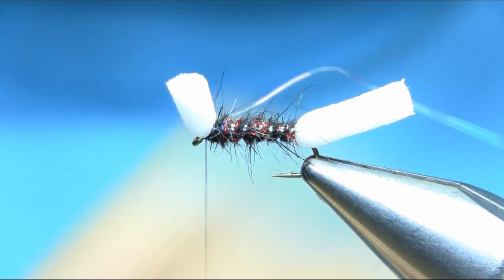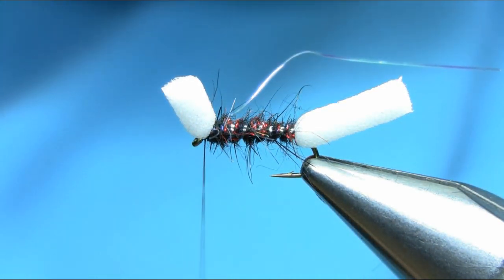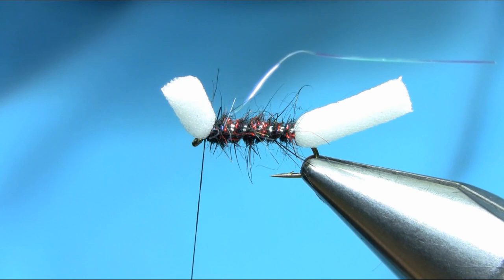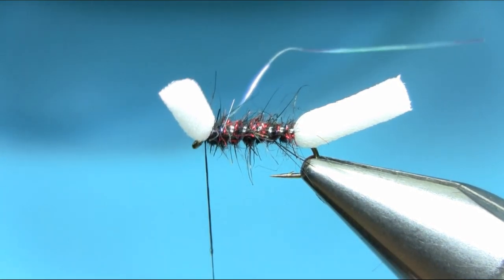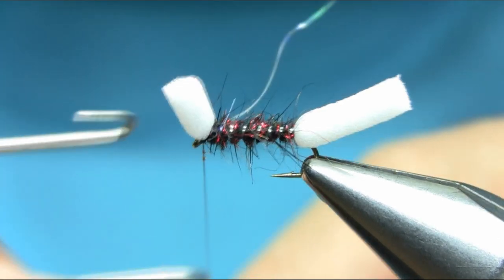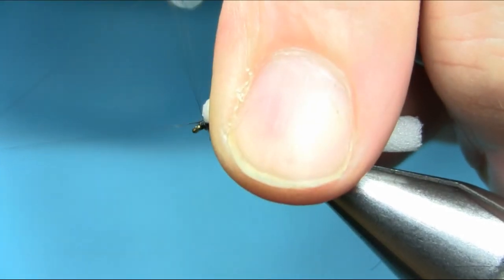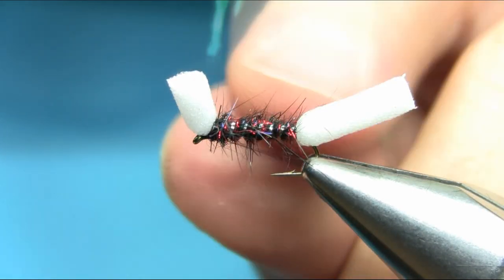Pull all this back and then use your varnish on the thread to secure. A couple of turns and whip finish. That's a very simple pattern, and the most effective pattern.